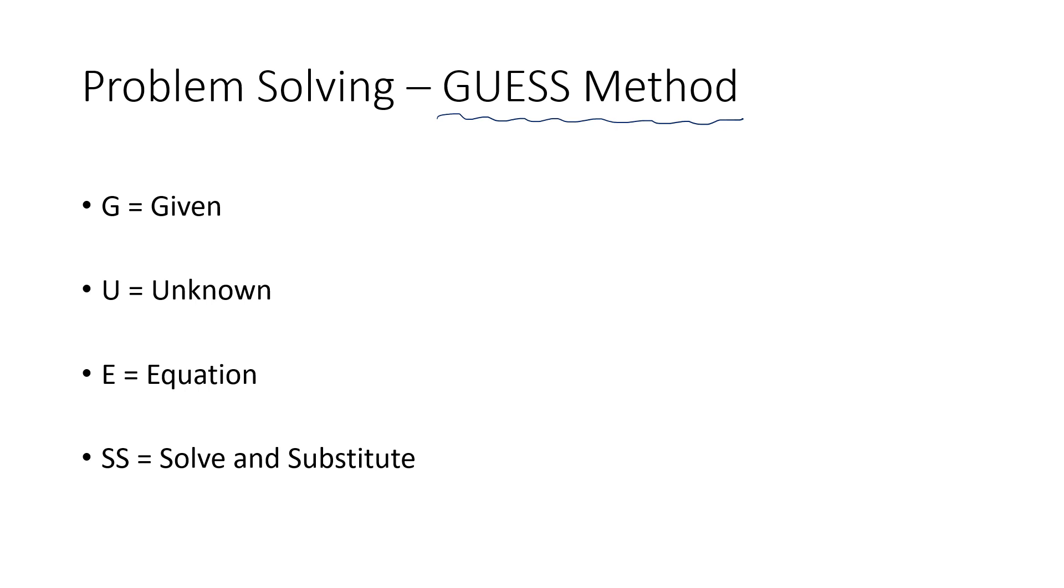At which point, she really cracked up, and then she explained to me that GUESS stood for Given, Unknown, Equation, and then Solve and Substitute or Substitute and Solve, depending on your preference. So basically, we need to look at the data that we are given, and see what information we're given and what information is unknown. What is it that we need to solve for? Then we need to determine what equation we're going to use.